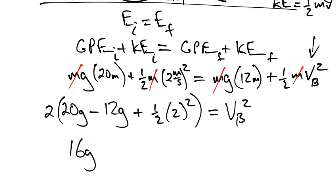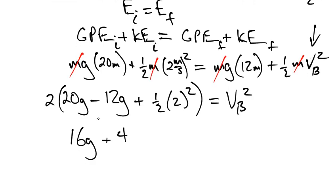And 2 times that, well, that cancels the 1 half. And that's plus 4, 2 squared. And then, we can substitute for G, which is 9.8, pretty close to 10. But let's do 9.8 just to be exact. So let's go 16 times 9.8 plus 4. That gives us 160.8.